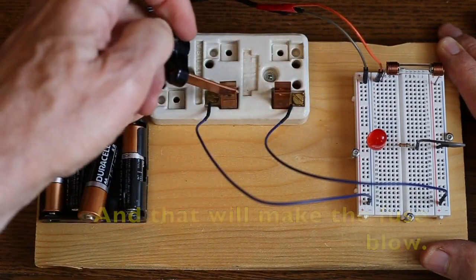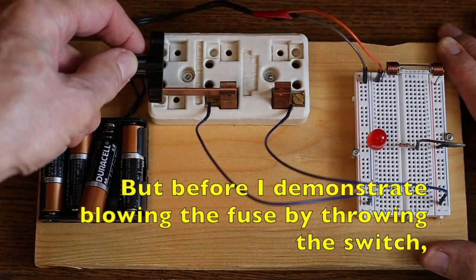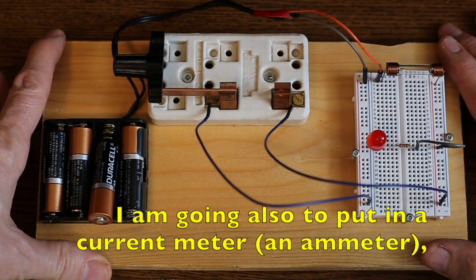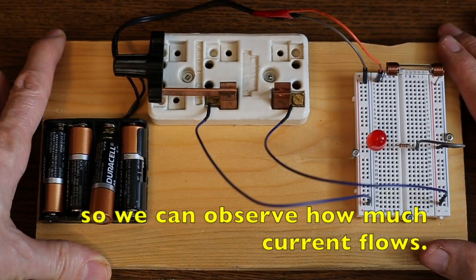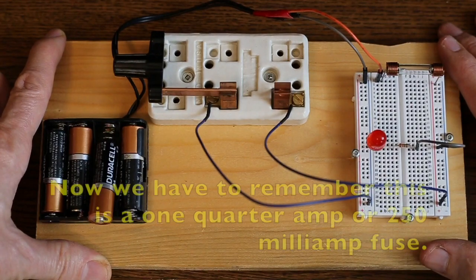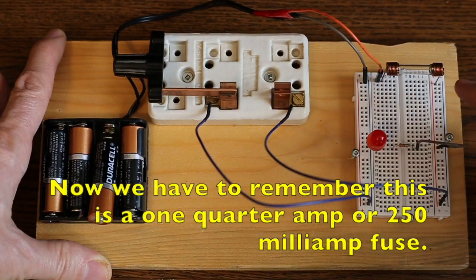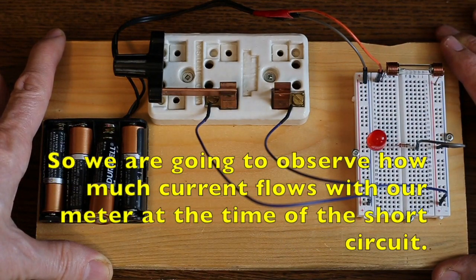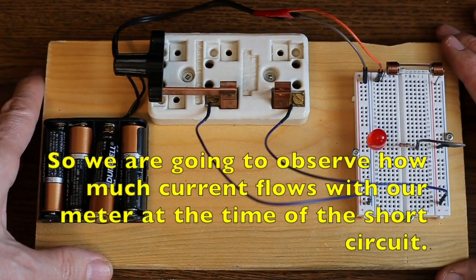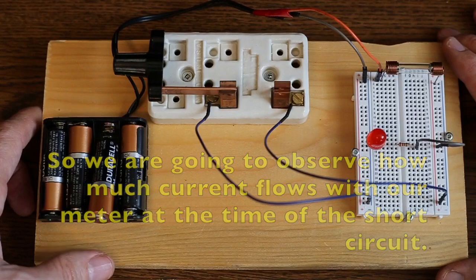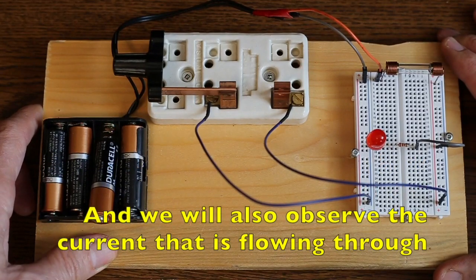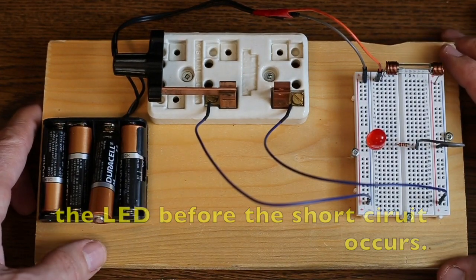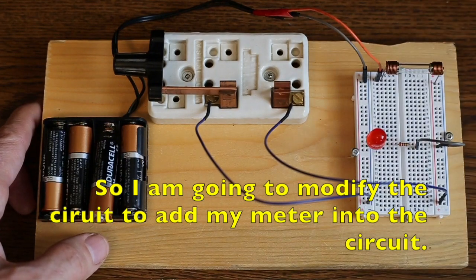So, before I demonstrate blowing the fuse by throwing the switch, I'm going to also put in a current meter, an ammeter, so we can observe how much current flows. Now, we have to remember this is a one-quarter amp, or 250 milliamp fuse. And so, we're going to observe how much current flows with our meter, at the time of the short circuit. And we'll also observe the current that's flowing through the LED, before the short circuit occurs.